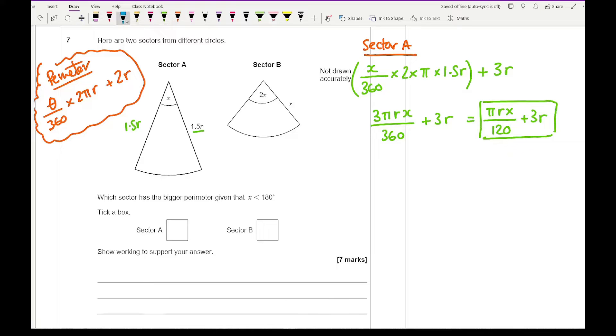Doing the same but this time for sector B. Working at the perimeter, the theta is 2x, so it's 2x over 360 multiplied by 2 times pi times r, and we're adding 2r to it. Simplifying, 2x times 2 times pi times r gives me 4 pi r x over 360 plus 2r, which if I simplify becomes pi r x over 90 plus 2r.